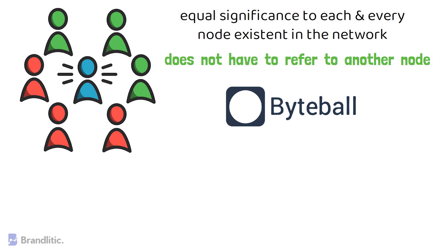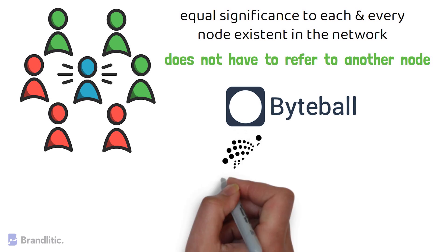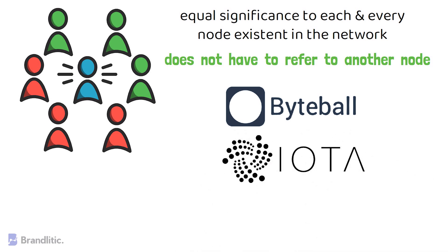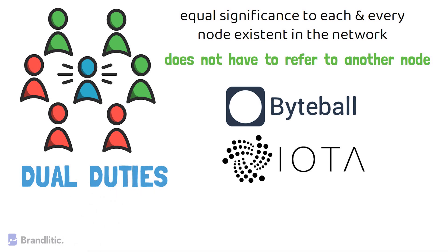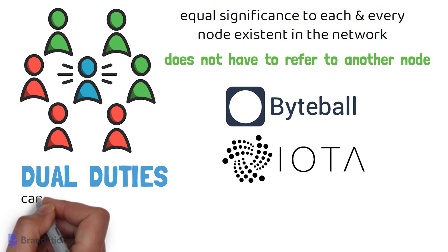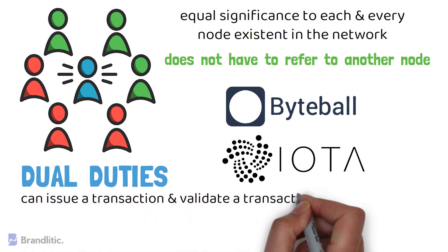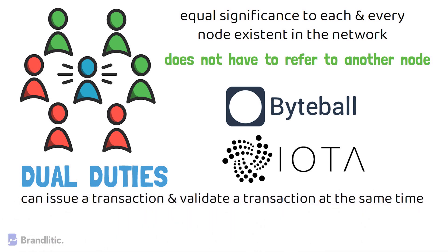Already there are projects like Byteball that use the DAG structure to create next-generation networks free of traditional blockchain limitations. One of the most notable is IOTA Tangle, where miners and nodes can perform dual duties. A miner on Tangle can issue a transaction and evaluate a transaction at the same time — something not possible in traditional blockchain.